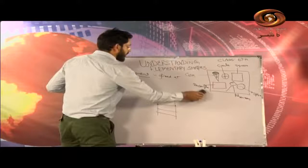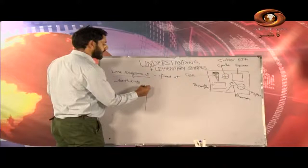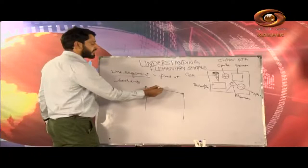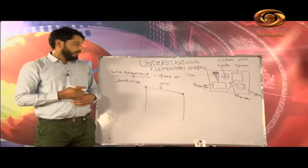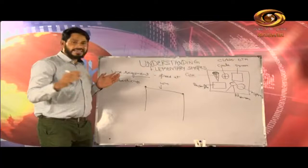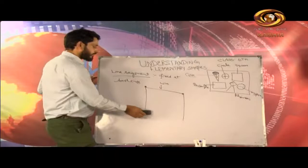Furthermore, we can have more examples of the line segment. If we look at two electric poles and a wire connecting them — we can say that this wire is again a line segment. How can we say this is a line segment? You see that it is having two fixed points at the two poles, so this entire length of the wire represents the line segment. We can have more examples, and you can think of them yourselves.